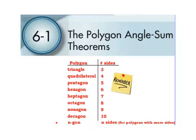After about 10 sides, we kind of get over it and quit naming every single one, and we just call it an n-gon. So if it had 14 sides, we'd call it a 14-gon, or 20 sides is a 20-gon. Be looking for that notation.